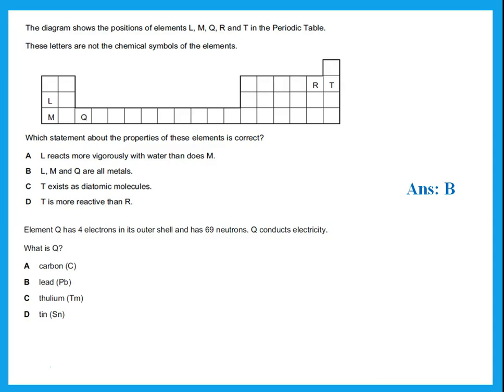Element Q has four electrons in its outer shell and has 69 neutrons. Q conducts electricity. What is Q? Now, four electrons in its outer shell, that must be in group 4. So you look at which ones in group 4 has 69 neutrons. Remember that the neutrons is the mass number minus the atomic number. So if the big number minus the small number gives you 69, then that is what we're looking for. And that is actually Tin.